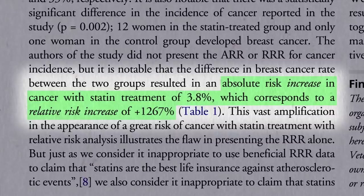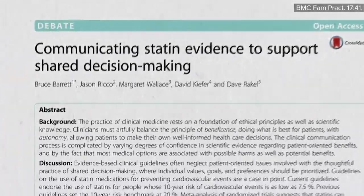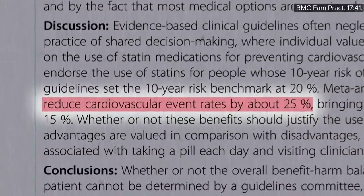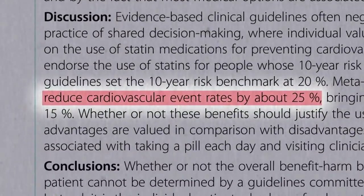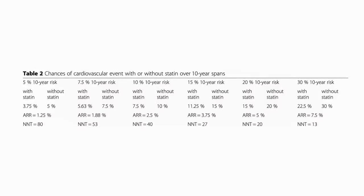So ideally, you'd use both the relative risk reduction and absolute risk reduction stats. In terms of benefits, when you compile a bunch of statin trials together, the relative risk reduction is 25%. So if your 10-year risk of a heart attack or stroke is 5%, then taking a statin would take that down from 5% to 3.75% — an absolute risk reduction of 1.25%, or a number needed to treat of 80, meaning there's about a 1 in 80 chance that you'd avoid a heart attack or stroke taking the drug over the next 10 years.